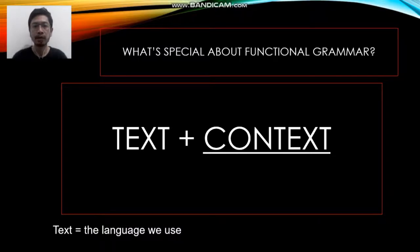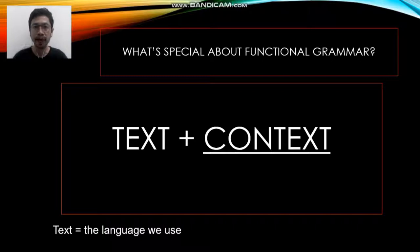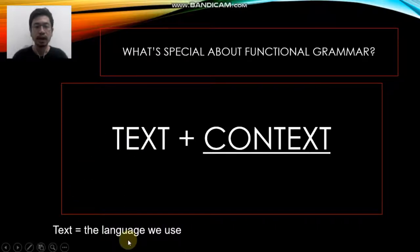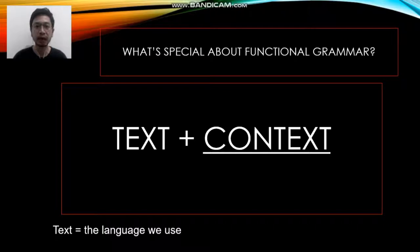Let me remind you about the notion of functional grammar. What's special about functional grammar? In this type of grammar, we do not only focus on text, but we also pay attention to context. The role of context here is very paramount — it is very crucial in functional grammar. So we try to see how text is interpreted in relation to the context. If text is the language we use, context is the settings or the situation that contributes to the meaning of the language that we use.